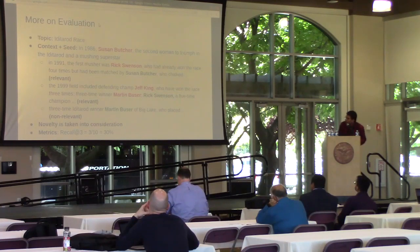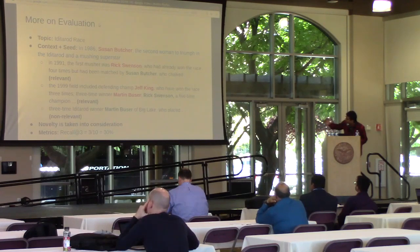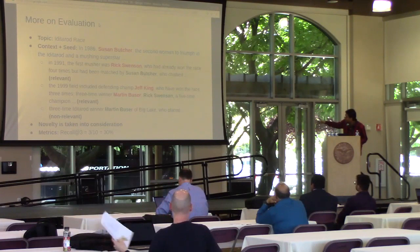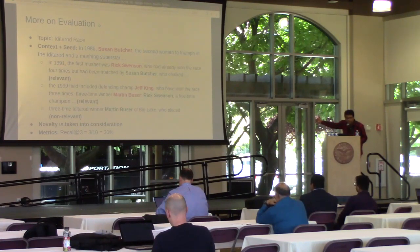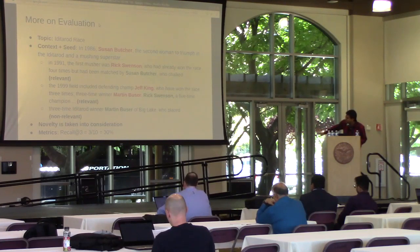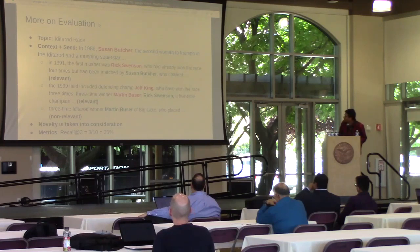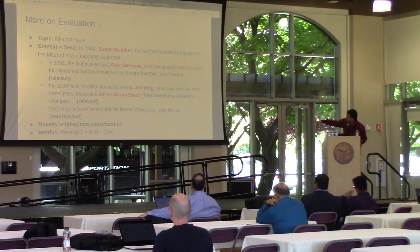I'd like to talk a bit about evaluation. If you see that the topic is Iditarod race, and Susan Butcher is a relevant entity, and assuming there is a model that can retrieve three sentences — we can see that the red entities are the relevant ones, those are the winners of Iditarod. But if you look at the third sentence, we say it is non-relevant, but still there is a winner, Martin Buser, in there.